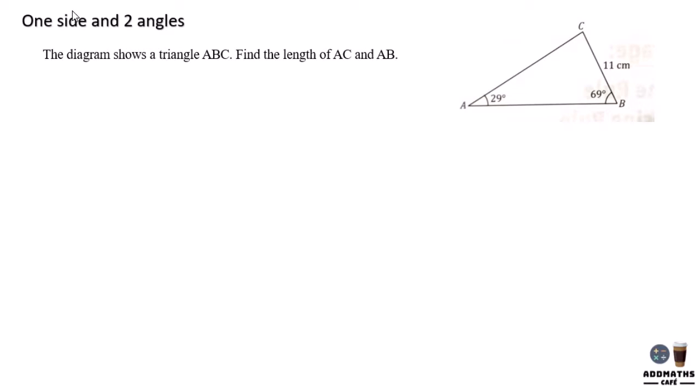Your question here is with one side and two angles, so you have to use the sine rule formula. I have one side and two angles. You know that this angle represents that side, this angle represents this side. You are required to find the length AC and length AB.